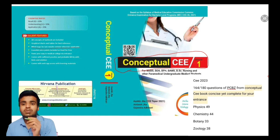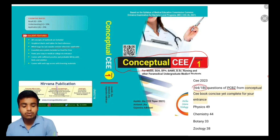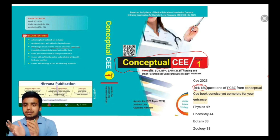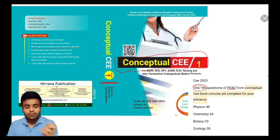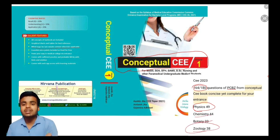Regarding how many questions came from this book - I don't make false commitments - I have made a separate PDF about the questions with references. From our book we got 164 out of 180 questions in physics, chemistry, botany, and zoology. That is 49 questions from physics, 44 from chemistry, 33 from botany, and 38 from zoology.